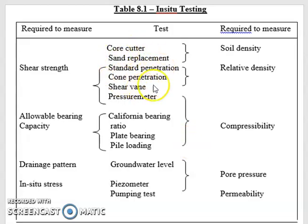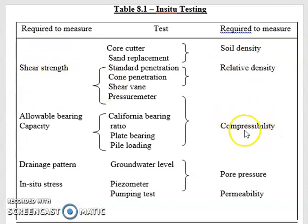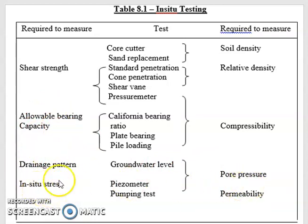These are some of the types of in-situ tests that can be carried out on the spot without bringing the sample to the lab. The types of test basically look at density, estimated shear strength, compressibility — which gives you the allowable bearing capacity — pore pressure so you know the drainage pattern, permeability, and in-situ stress, and so forth.